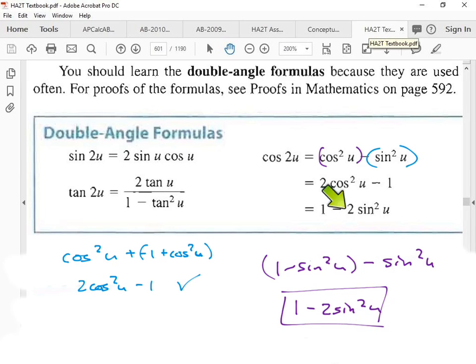And my students, that is why cosine 2u gets three of them. Because of the Pythagorean identity. He gets three identities for the double angle formula.